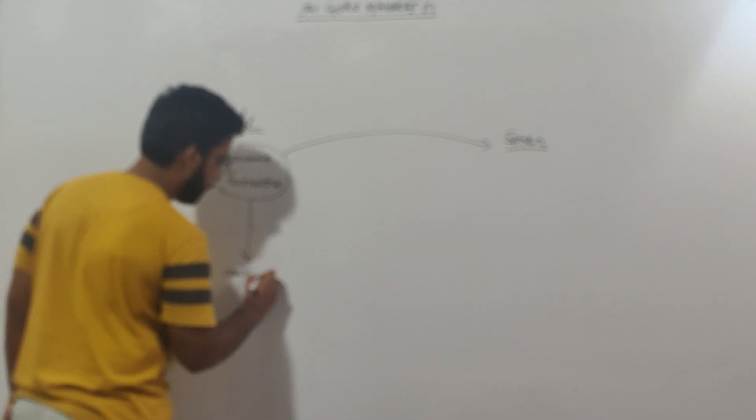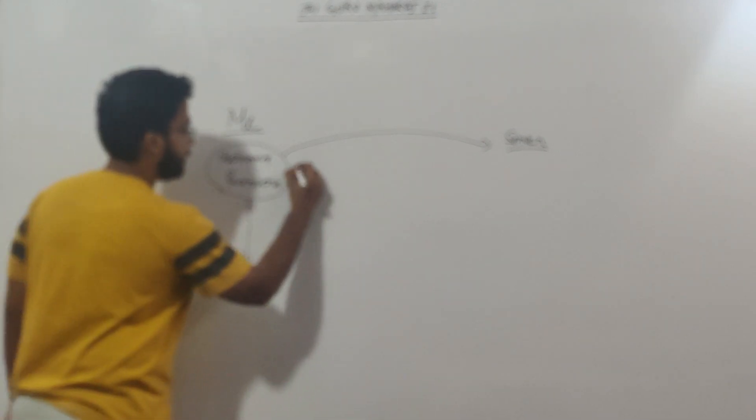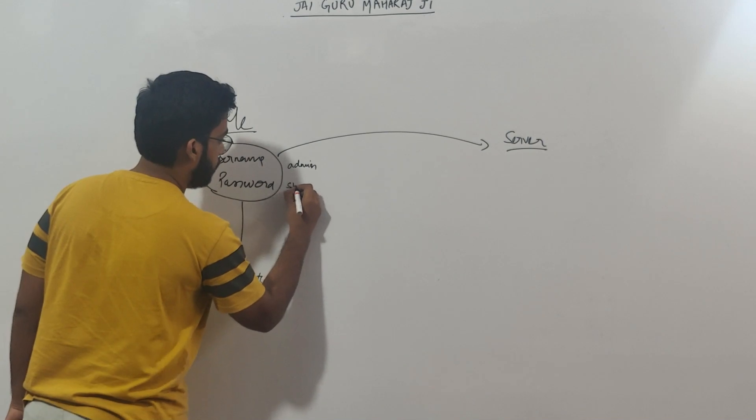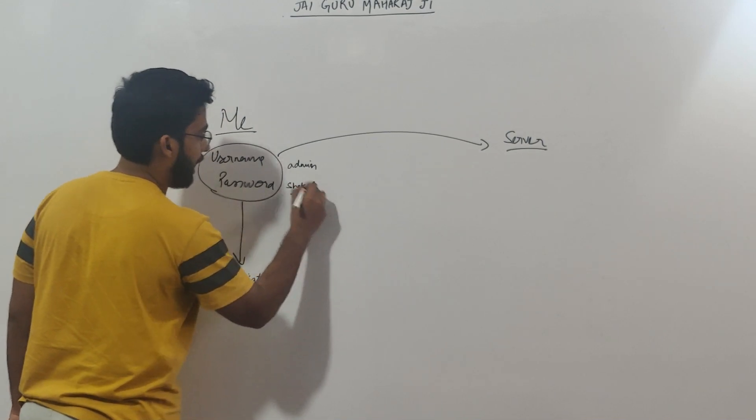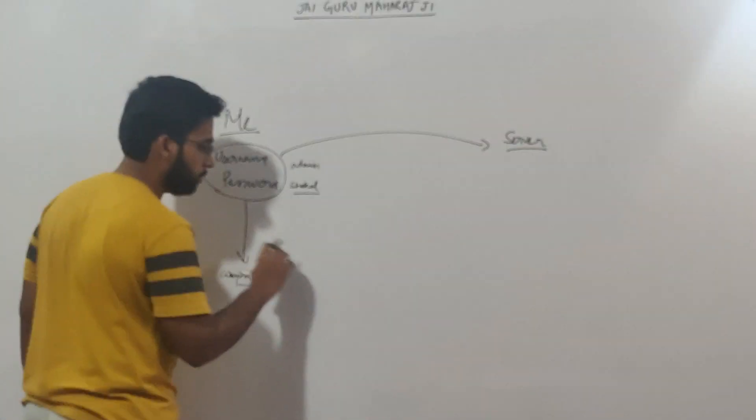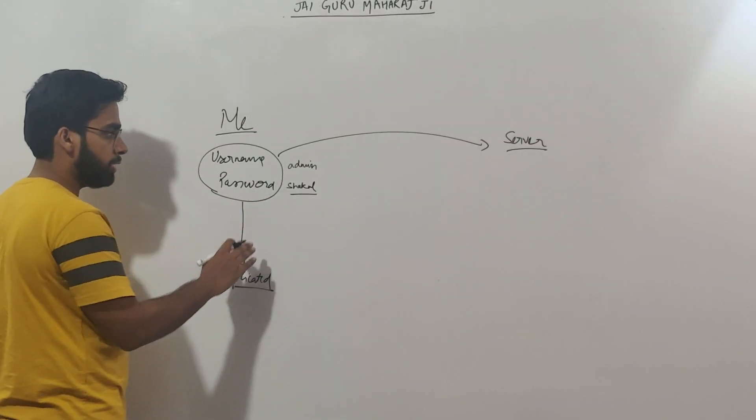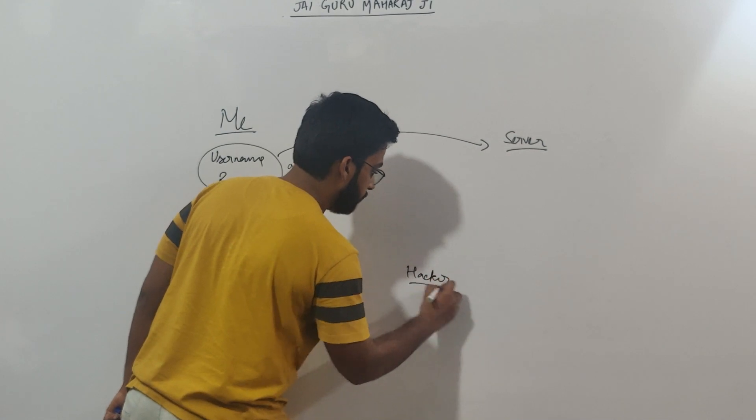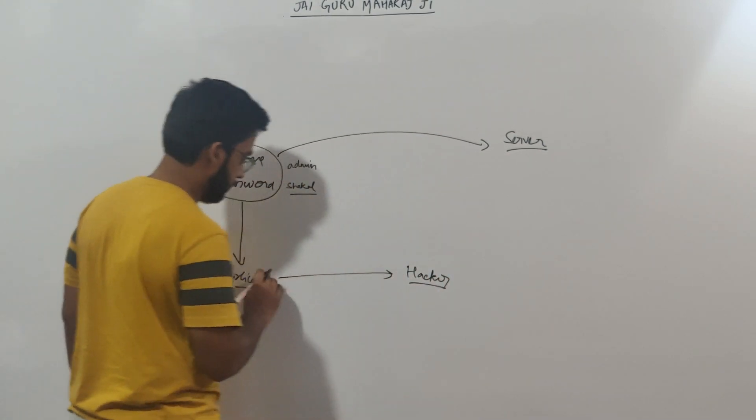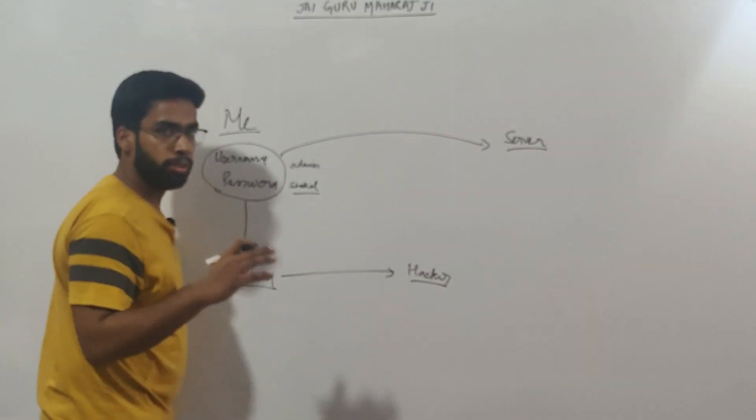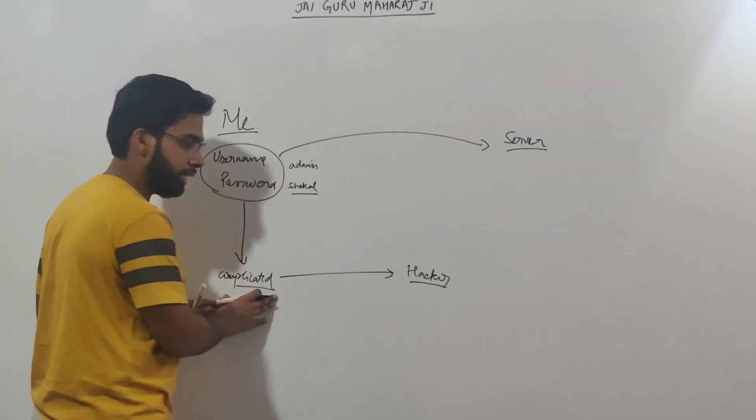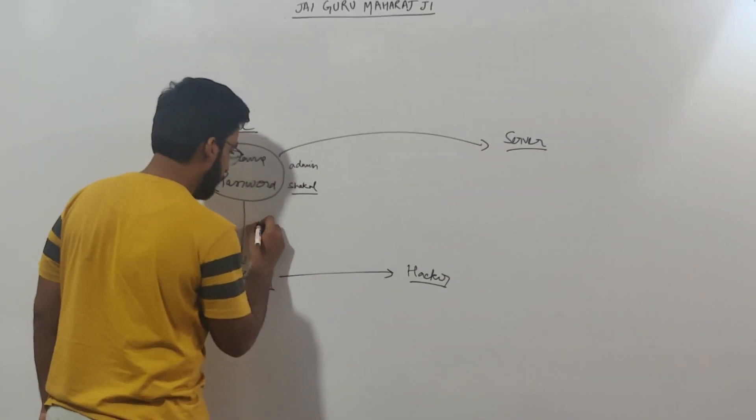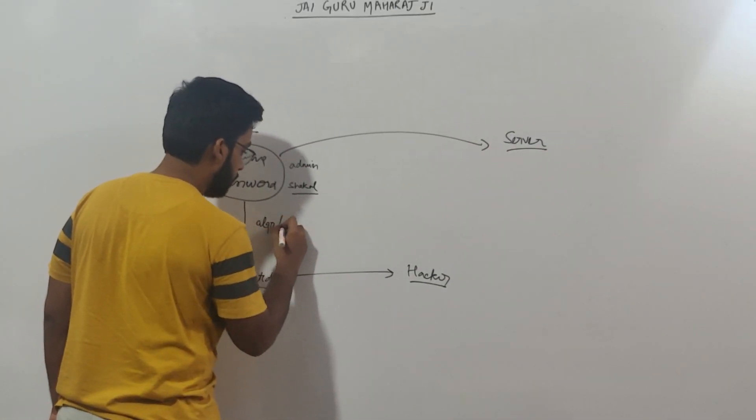Complicated or let's say scrambled. This is like if this username is admin or the password is shakun, I would not send it as it is. I would convert it into some gibberish text. Why I would do that is, if anyone in the middle, this hacker gets hold of this data as it is, this complicated data, he would not understand it. If he uses that data, that password and that username would be correct, right?